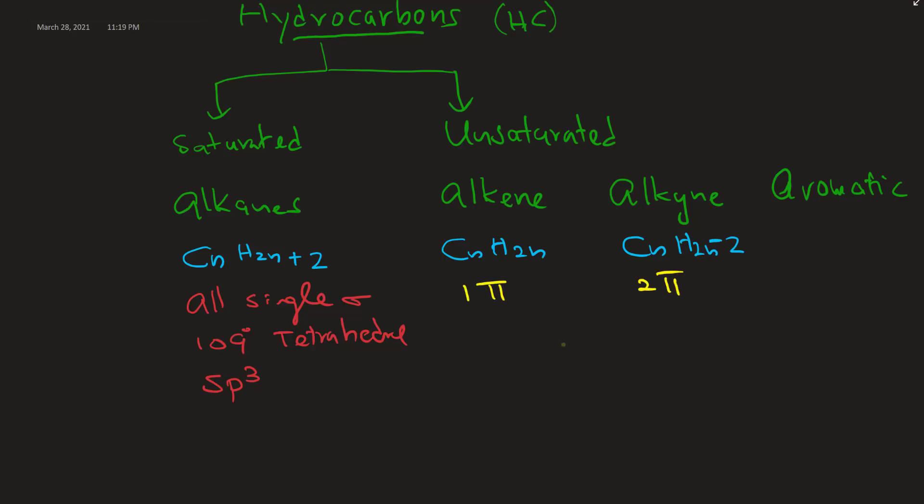So alkenes have one pi bond, alkynes have two pi bonds, so one triple bond at least. Now alkenes are 120 degrees trigonal planar, sp2. And alkynes are two pi bonds or one triple bond, and sp 180 degrees linear.